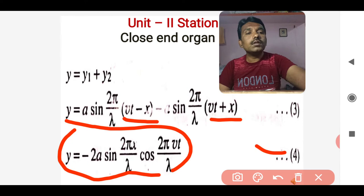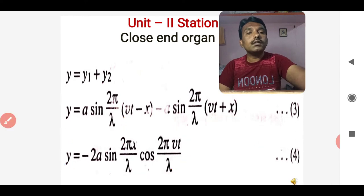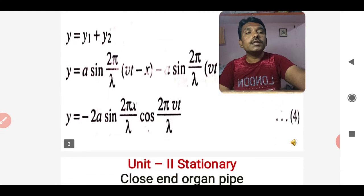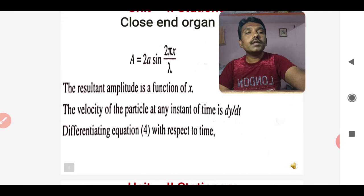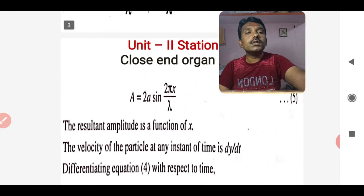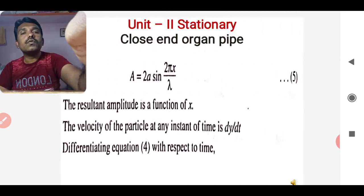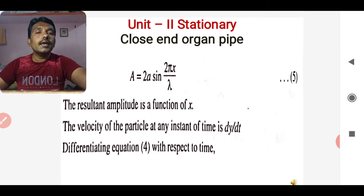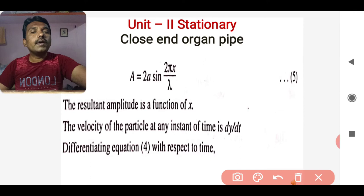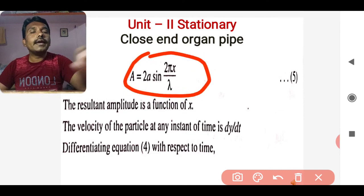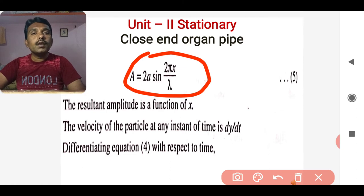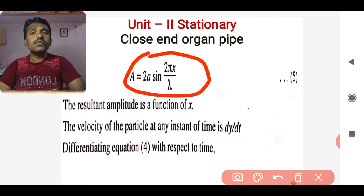Now, as far as the amplitude is concerned, the amplitude A is equal to 2a sin(2πx/λ), which is the resultant amplitude as a function of x for the closed-end organ pipe.